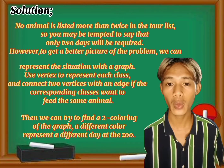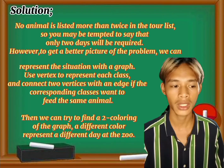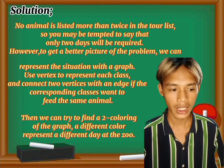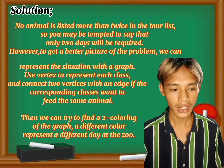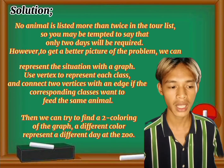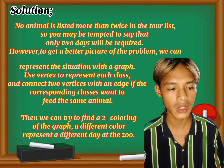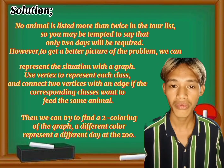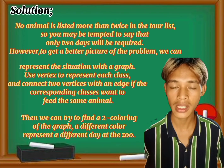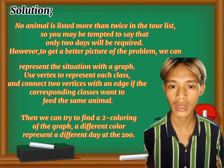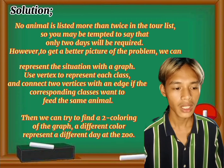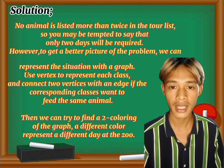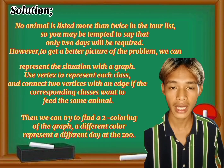We are going to construct a graph now. Use a vertex to represent each class, and connect two vertices with an edge if the corresponding classes want to feed the same animal. We are going to connect vertices that share the same animals they want to feed. Then we can try to find a two-coloring of the graph where different colors represent different days at the zoo.